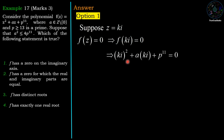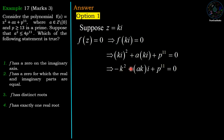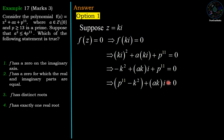Substituting ki into the polynomial: (ki)² + a·(ki) + p¹¹ = 0. Since i² = −1, this gives −k² + aki + p¹¹ = 0. Gathering the real and imaginary parts: (p¹¹ − k²) + aki = 0. Comparing real and imaginary parts: p¹¹ − k² = 0 and ak = 0.